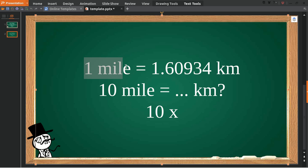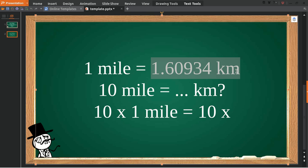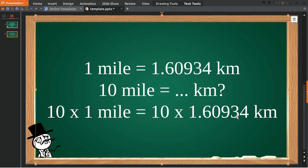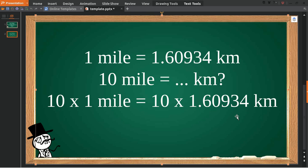Give it an equal sign, and then you multiply 10 again with this number. So 10 miles is equal to 10 multiplied by 1.60934, which equals 16.0934 kilometers.